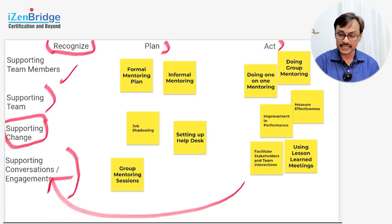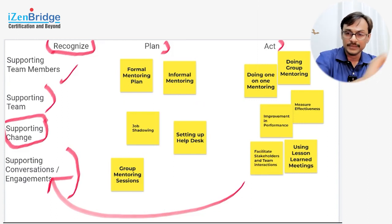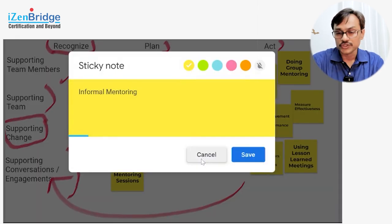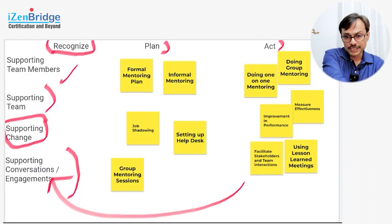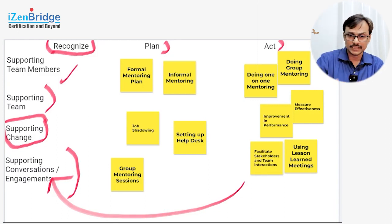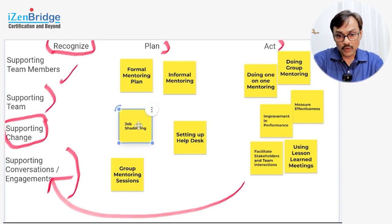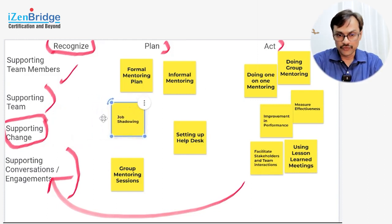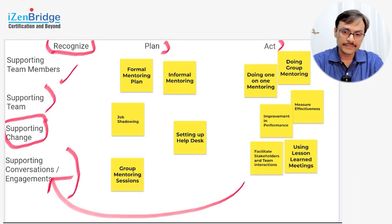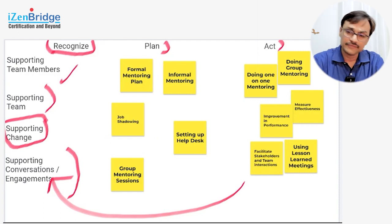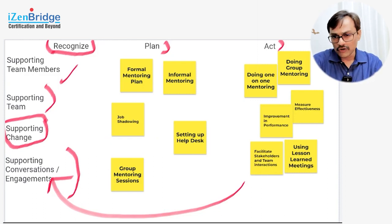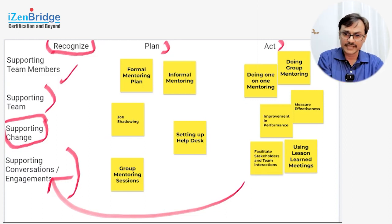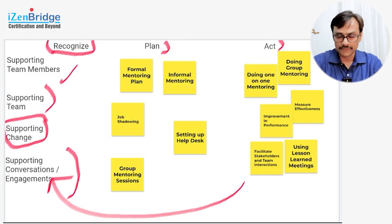There could also be an informal mentoring process where identified mentors and team leaders are available when people get stuck and need advice. You can recognize subject matter experts as go-to persons. Sometimes these go-to persons could be stakeholders — for example, a compliance stakeholder can be recognized as a mentor. You can also plan job shadowing, especially with stakeholders and team members, as an important tool when supporting change. One person does the work while another observes and corrects — there may be some overlap of training and mentoring, but this develops competency.